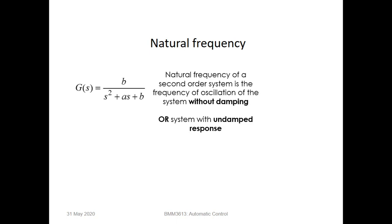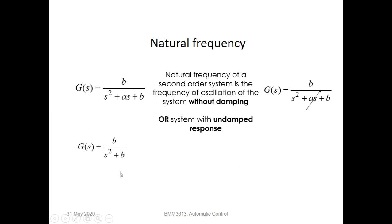Natural frequency of a second-order system is the frequency of oscillation of the system without any damping, or when the system has an undamped response. The first step to determine natural frequency is by eliminating the middle term of the denominator. After that, you can determine the poles. From here, the poles become plus or minus the square root of b times j, and the square root of b is the natural frequency.